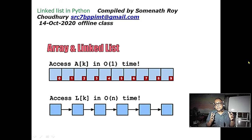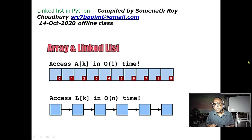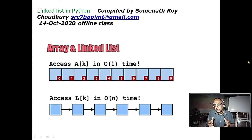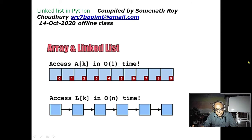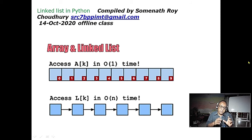The program is basically linked with the data structure. If the data structure is very, very powerful, then your program development time is less. That is one of the negative points of C — only the array data structure is there, and structure. Union is hardly used; earlier it was developed because at that time memory was very scarce. Right now structure is better, and structure is there in Python and Java also in a much better form, along with methods as object-oriented programming.